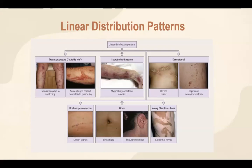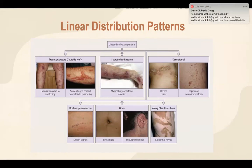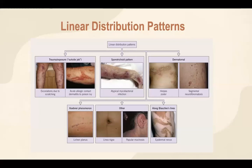The distribution of a lesion can be generalized, localized, or linear. For example, excoriation marks or scratch marks, allergic contact dermatitis secondary to poison ivy, or sporotrichoid pattern — which is when we have large, deep lesions or nodules in a roughly linear pattern, such as in this picture of mycobacterial infection. Linear distribution could be dermatomal, affecting the nerve innervation of the skin, such as in herpes zoster or shingles. It could be secondary to Koebner phenomenon, where new lesions appear in an area of cutaneous injury in otherwise healthy skin. Or it could follow Blaschko's lines, which are invisible lines in healthy skin believed to trace the migration of embryonic cells. Some disease processes make these lines visible, such as this picture of epidermal nevus.